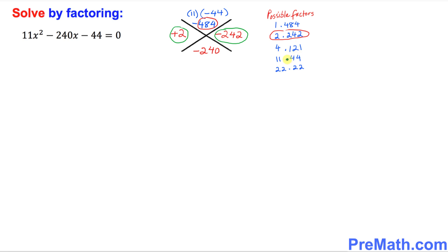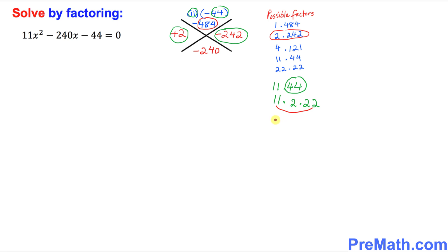Now, listing all the possible factors is really cumbersome and hectic, so you might be wondering if there's an easier alternative way. Let me show you. Look at 484, which we got from 11 times 44. Write down 11 times 44 — now 44 can be written as 2 times 22. You can then pair up: 11 times 22 gives you 242, times 2. That's another way of dealing with this problem.